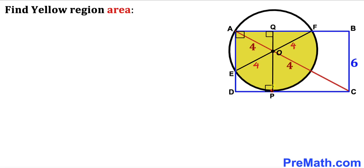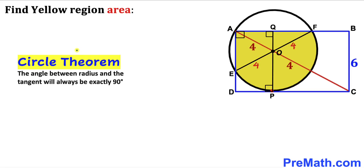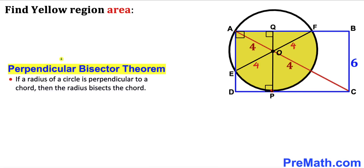We have dropped this perpendicular PQ. Now let's recall the circle theorem: the angle between the radius and the tangent will always be 90 degrees. And let's recall the perpendicular bisector theorem: if a radius of a circle is perpendicular to a chord, then the radius bisects the chord. Here AF is the chord, the radius is perpendicular to it at 90 degrees, so it divides chord EF into two equal parts — both segment lengths are equal.